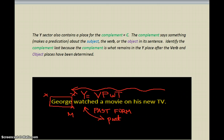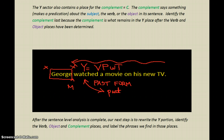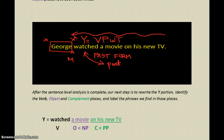For example: 'George watched a movie on his new TV.' George is the subject; both X-word places are empty; watched a movie on his new TV is the Y — it's a verb phrase with time because watched is the verb in the past form. When I rewrite the Y portion, I see: watched is the verb; a movie is the object — it's a noun phrase; on his new TV is the complement — it's a prepositional phrase.